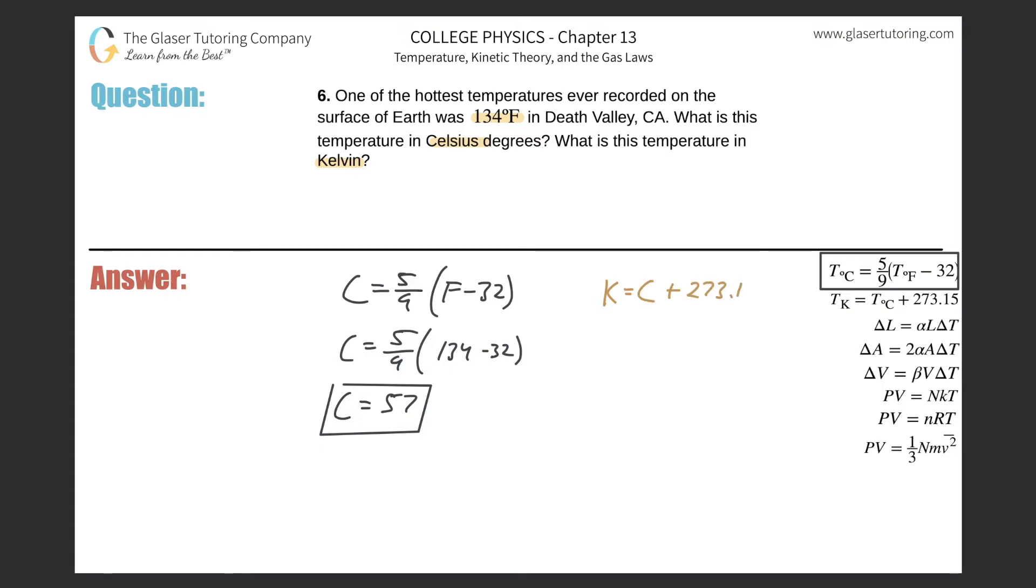This tells us that the Kelvin temperature is equal to the Celsius temperature plus this constant of 273.15. What I then need to do is realize they gave me Fahrenheit, so somehow I have to figure out a way to plug Fahrenheit in for Celsius.